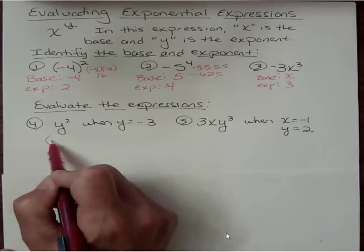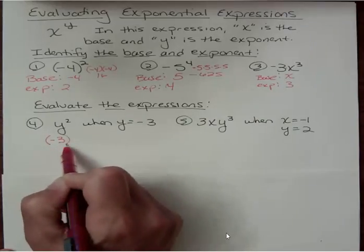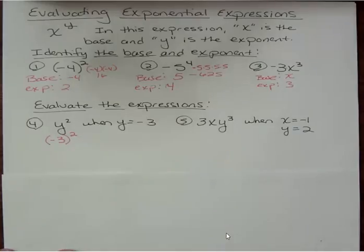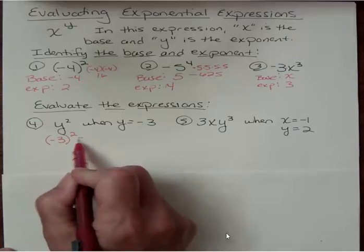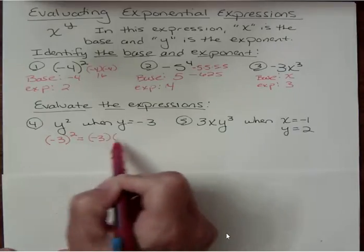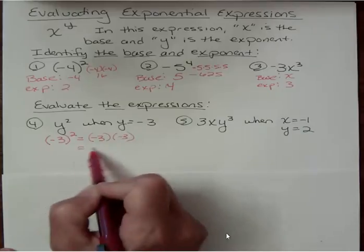Since y is negative 3, I want to make sure I put parentheses around it when I substitute it in. If you always put parentheses around what you substitute in, it will never steer you wrong. Sometimes you need them, sometimes you don't. It never hurts to have them. So put them on there because you might leave them off and it changes the value, right?